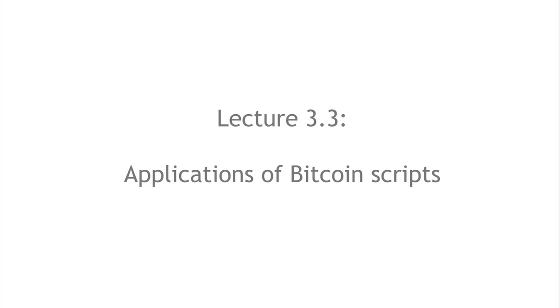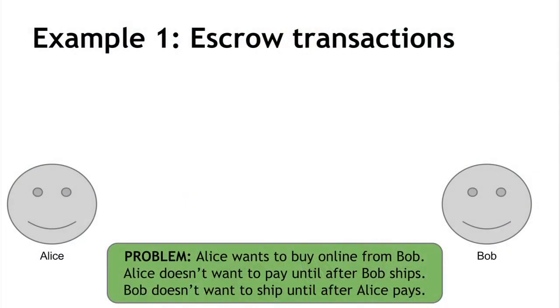Now let's look at what's actually cool about Bitcoin scripts. You can do quite a lot of neat things that justify the complexity of a scripting language. One example is escrow transactions. Alice and Bob want to do business — maybe Alice won an online auction and is ready to buy goods from Bob. Alice doesn't want to pay until she receives the goods, but Bob doesn't want to ship until he's been paid. The solution in Bitcoin is to introduce a third party and do an escrow transaction.